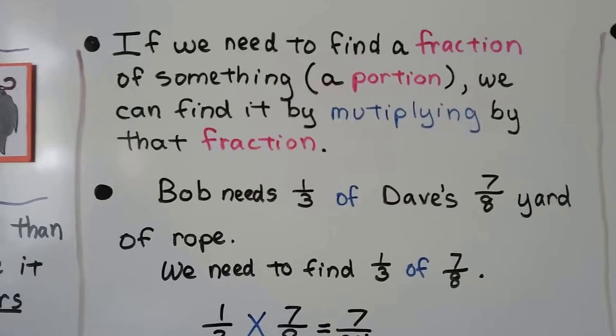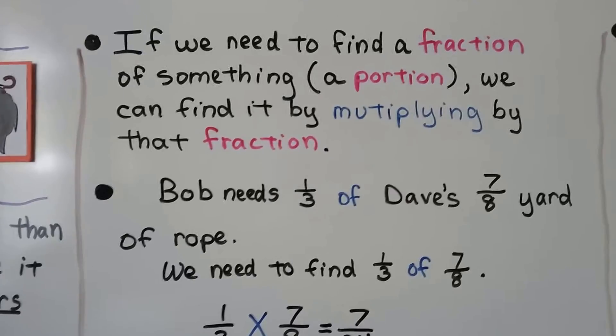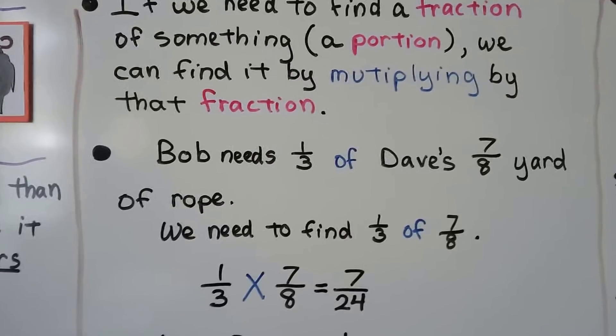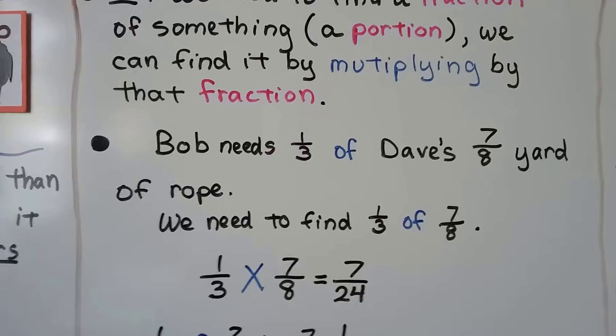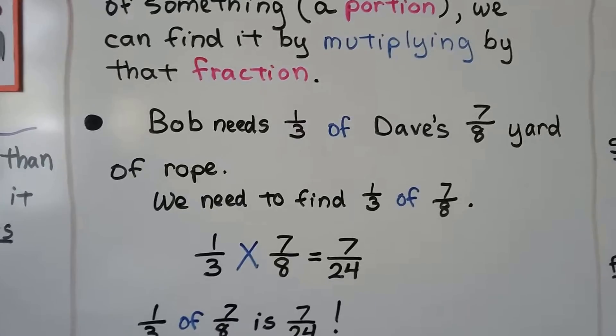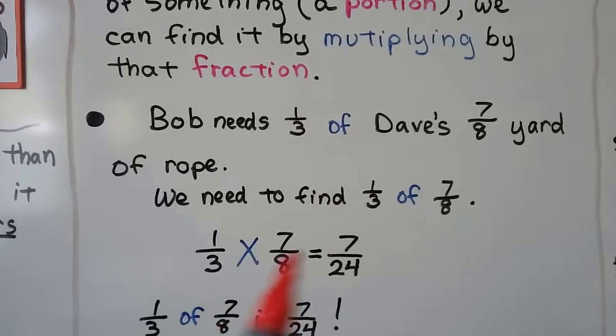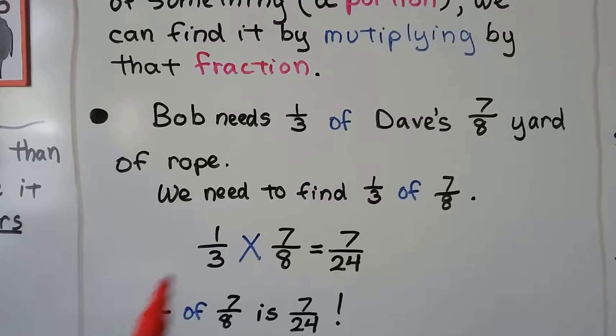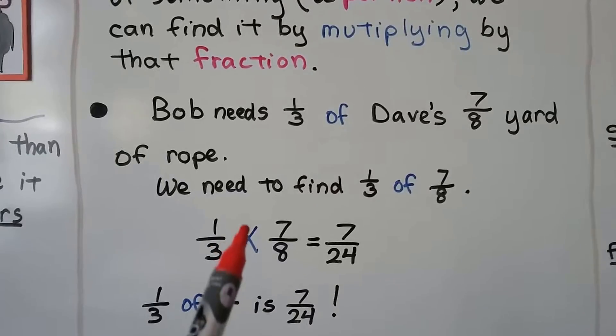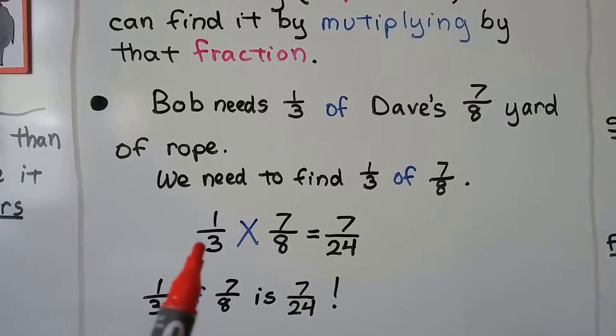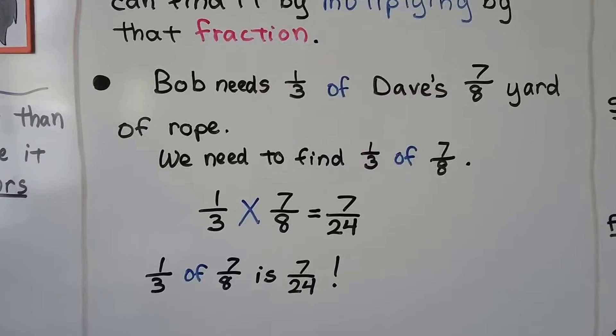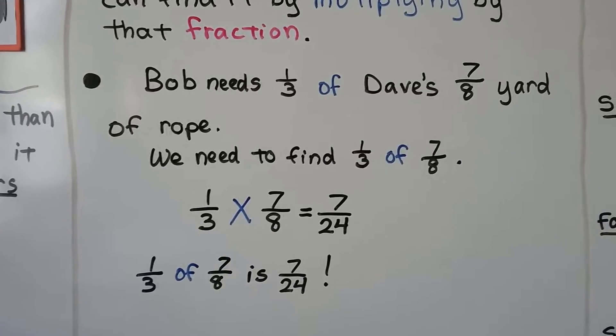If we need to find a fraction of something, that's a portion. We can find it by multiplying by that fraction. So Bob needs 1/3 of Dave's 7/8 yard of rope. Dave has 7/8 yards of rope. Bob needs a third of it. We need to find 1/3 of 7/8. So we multiply it. When you see this 'of', it means multiply. Multiply that fraction by that fraction. That 'of' is taking the place of that big multiplication x. So we have 1/3 times 7/8. We just go straight across. Numerator is 7. Denominator is a 24. 1/3 of 7/8 is 7/24. Isn't that easy?